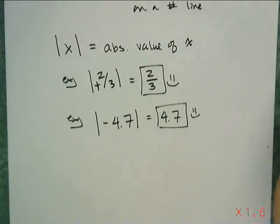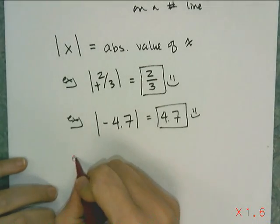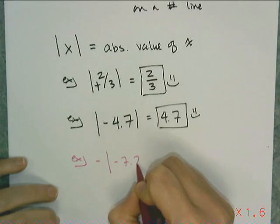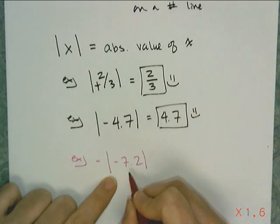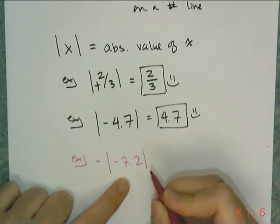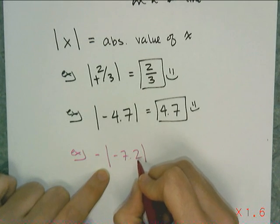So what I could do is see if you're actually paying attention by putting a negative sign outside of the absolute value. So what I'm asking for here is the opposite of the absolute value of negative 7.2. So I follow the order of operations here,